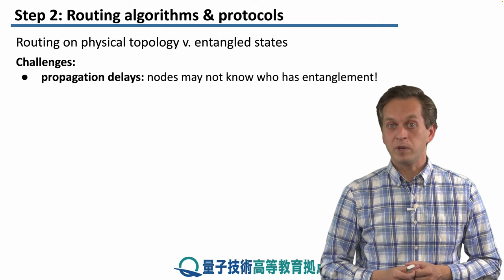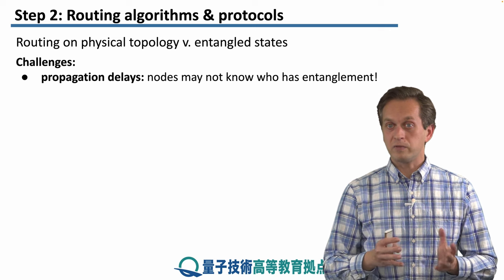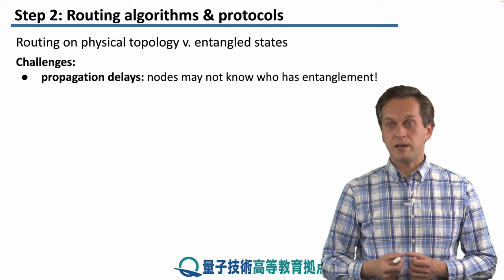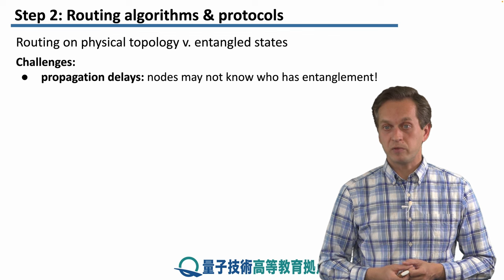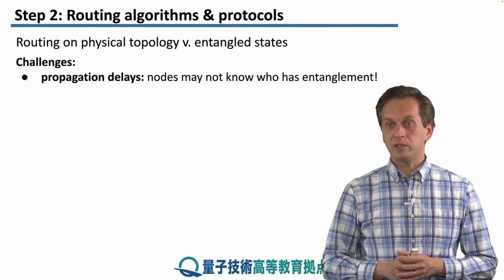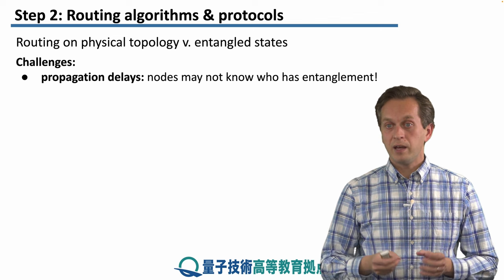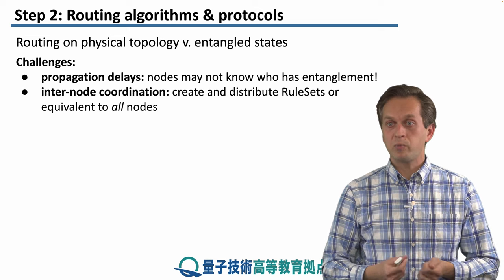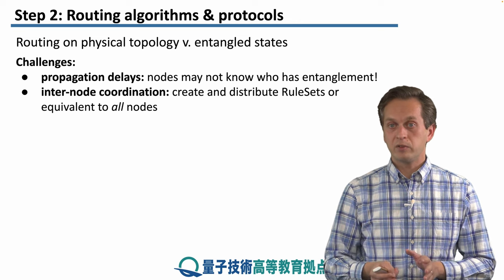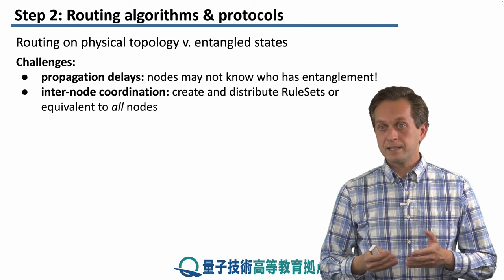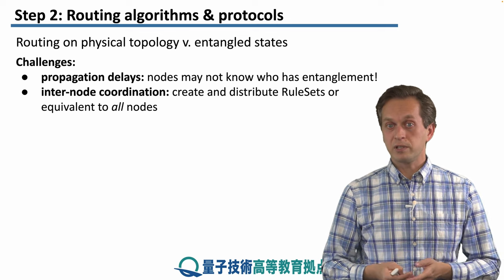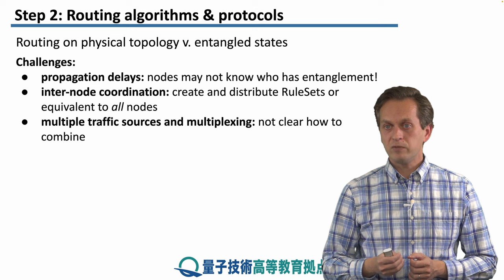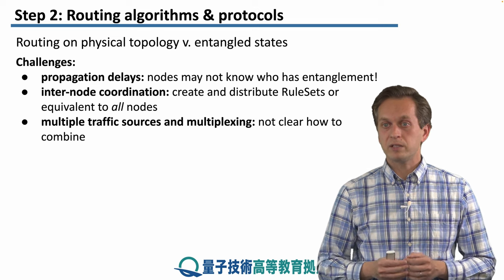The key challenges when considering physical topology versus entangled states include propagation delays — nodes may not know who has entanglement, which is a serious problem. If we want to change the entanglement path, we must know who is entangled to whom at every instant. Internet cooperation may be difficult: who needs to cooperate with whom, who is swapping with whom? In the last lesson, we presented one way of dealing with this through rule sets. Multipath traffic sources and multiplexing add further complexity when combined with rule sets.